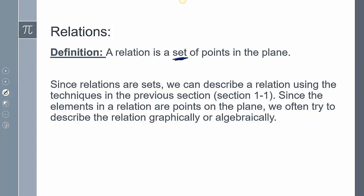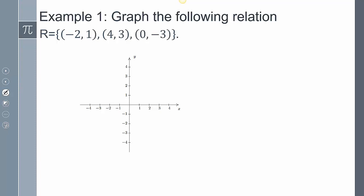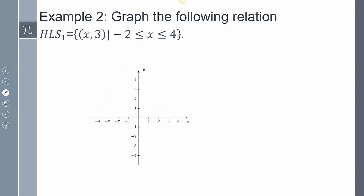Typically you'll notice that we're going to use both a graphical representation of a relation and sometimes look at it algebraically. For this first example, graph the following relation. The set R contains the points negative two one, four three, and zero negative three. All I need to do is plot them: negative two one, then four three — over four up three — and zero negative three — at zero down three. This is the graphical representation of the set.